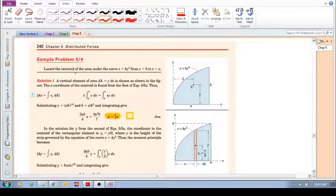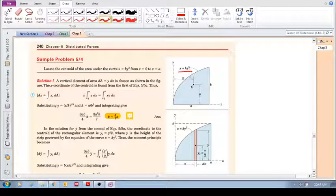Sample problem 5-4: locate the centroid of the area under the curve. The curve is given by x equals k y cubed. The x dimension length is a and the height is b, and we want to locate the centroid of this area.